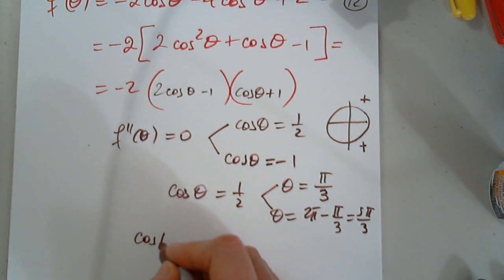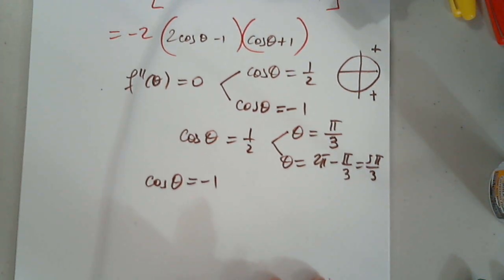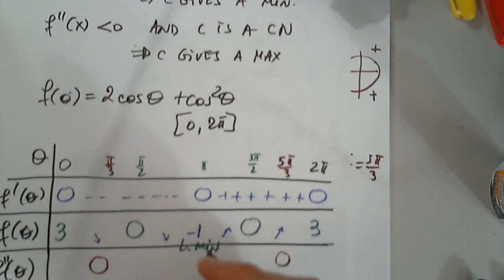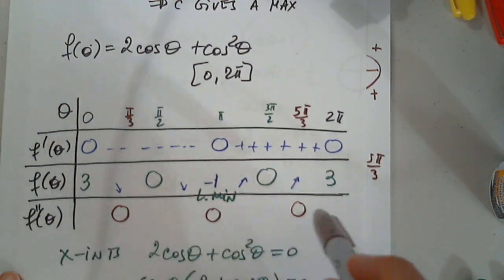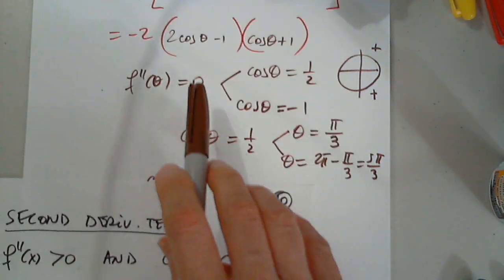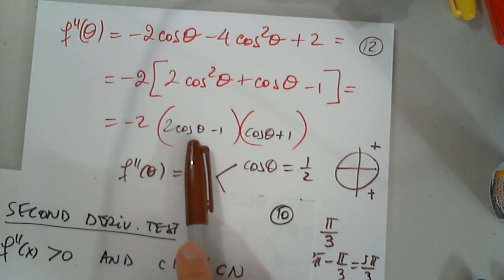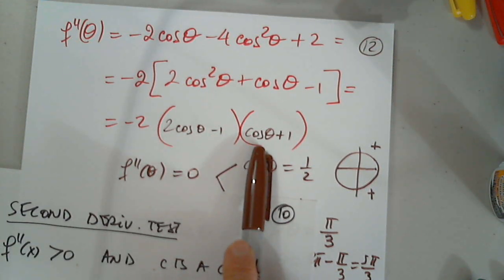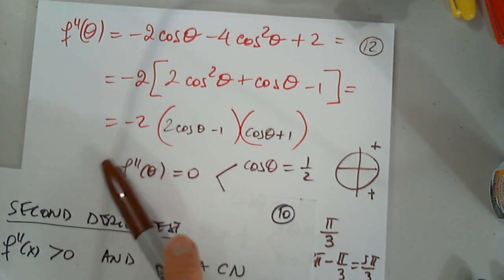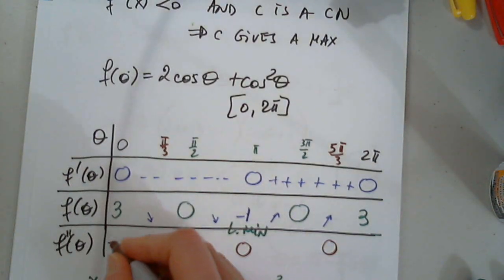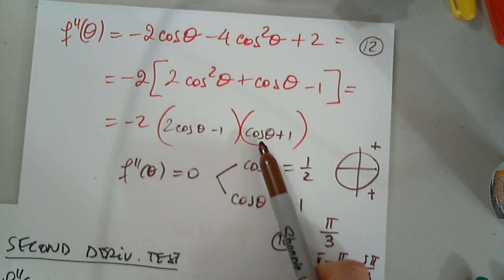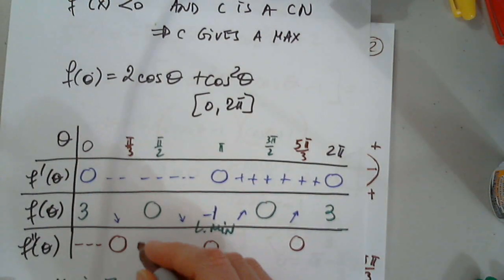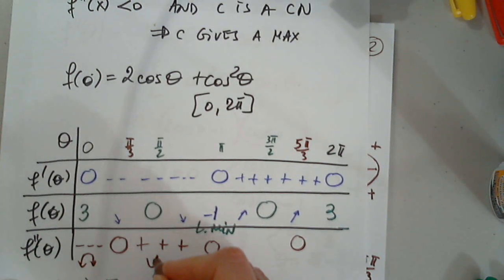Cosine theta equals negative one is at pi. So now I need the sign across four intervals. Plugging in zero: cosine is one, positive times positive but negative outside — so negative. Plugging in pi over two: cosine is zero, so this is negative one, and it's positive. The sign analysis holds water.